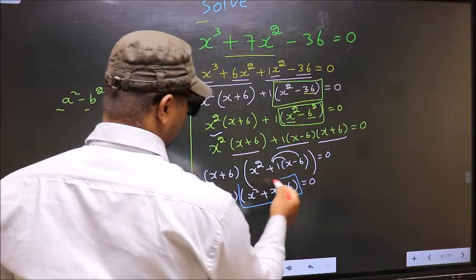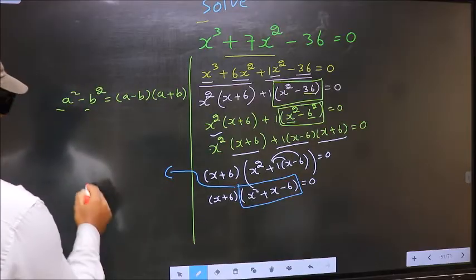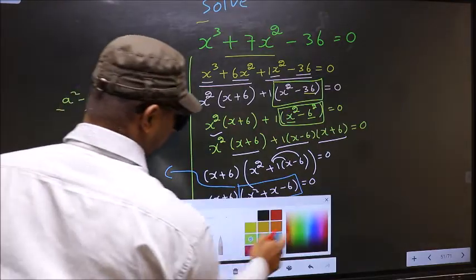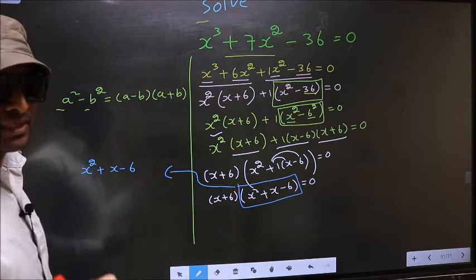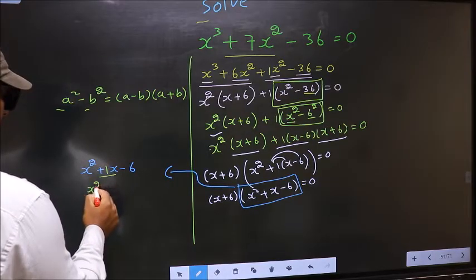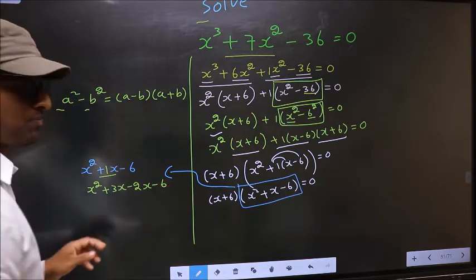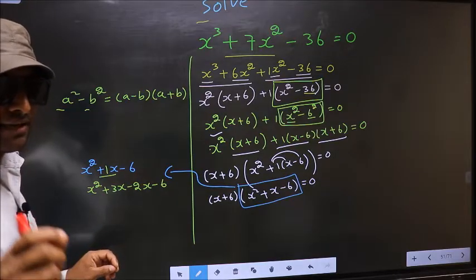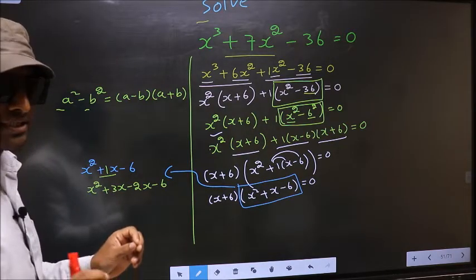Now, we got a quadratic here. I will factorize the quadratic. That is, x square plus x minus 6. To factorize this, we should split the middle term. In place of plus 1x, now I write plus 3x minus 2x minus 6. I am not doing factorization steps — directly I have split: plus 1x into plus 3x minus 2x.